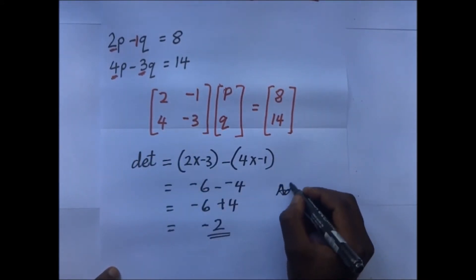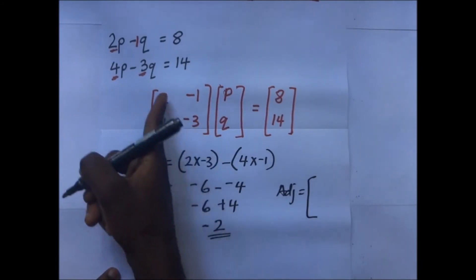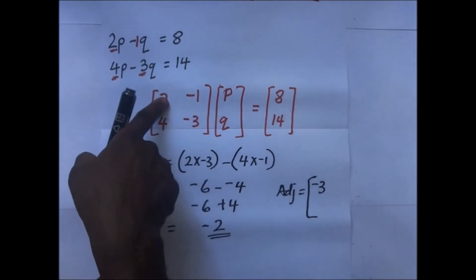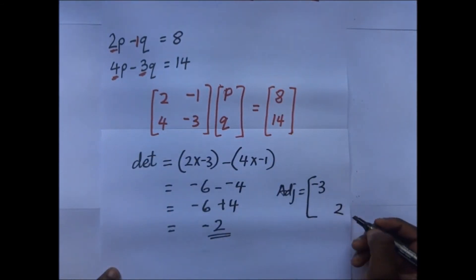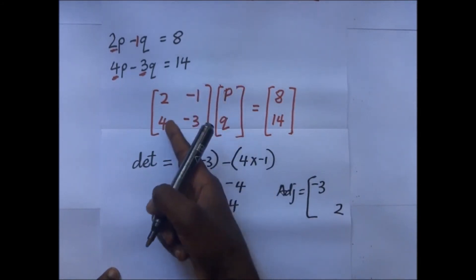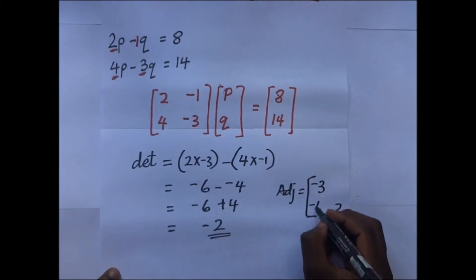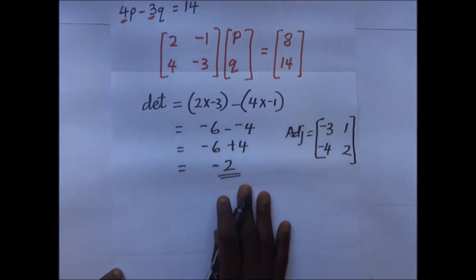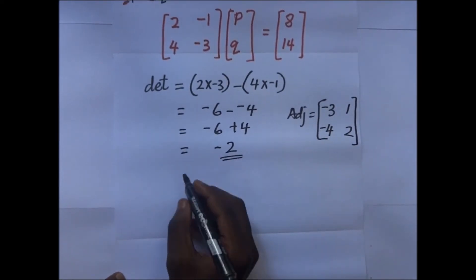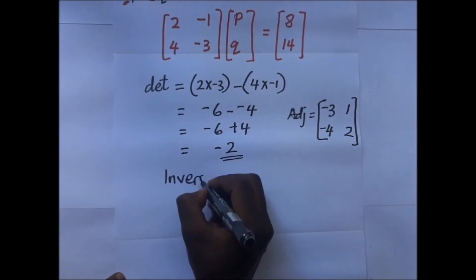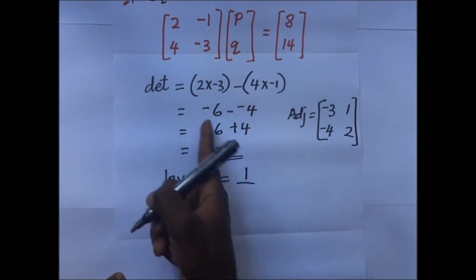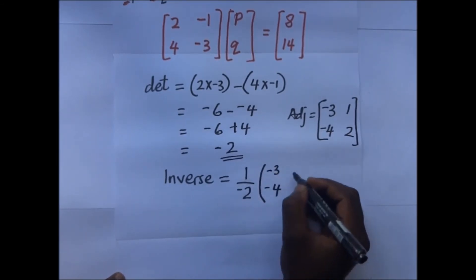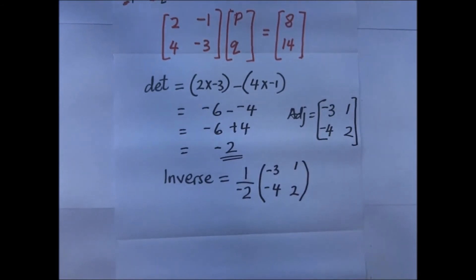We find the adjoint of the matrix. We interchange the numbers in the main diagonal: -3 comes to the top-left and 2 comes to the bottom-right. In the minor diagonal we multiply by -1: 4 × (-1) = -4, and (-1) × (-1) = 1. So the adjoint is [-3, -4; 1, 2], and the inverse is (1/-2) × [-3, -4; 1, 2].